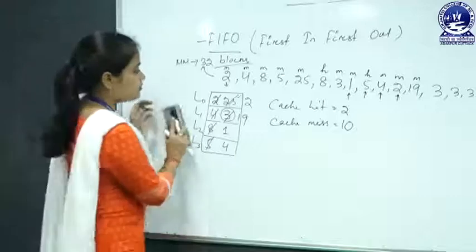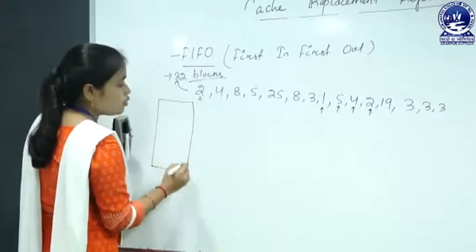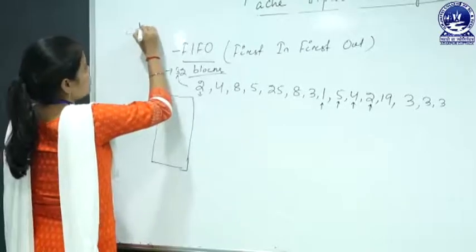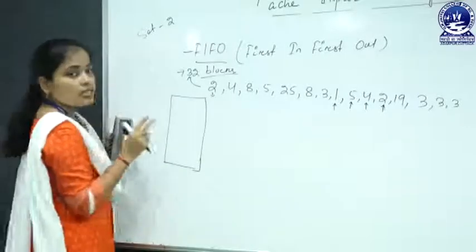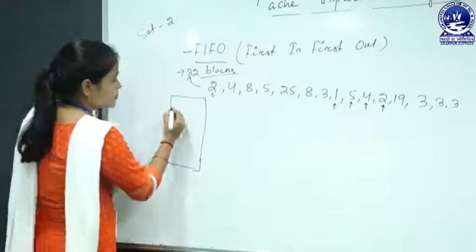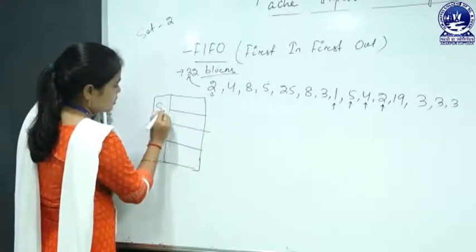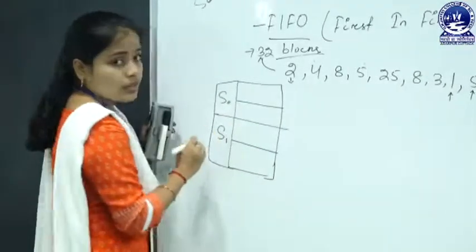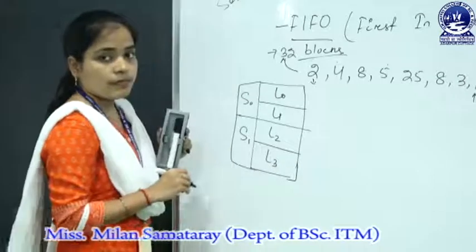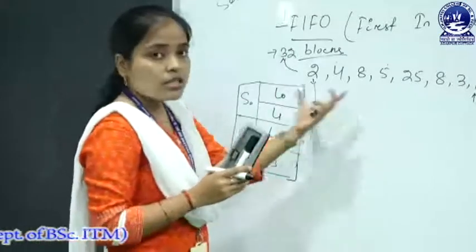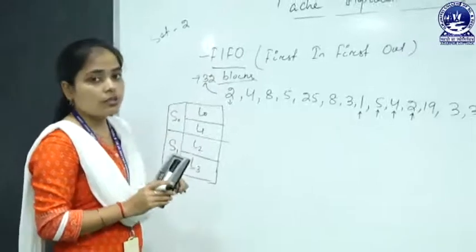Now let's implement FIFO in set associative mapping. Let there be 2 sets in the cache memory — this is a 2-way set associative mapping — and each set contains 2 lines. So we have set 0 with L0 and L1, and set 1 with L2 and L3. We have to map the requested blocks into this cache memory using the FIFO replacement algorithm.